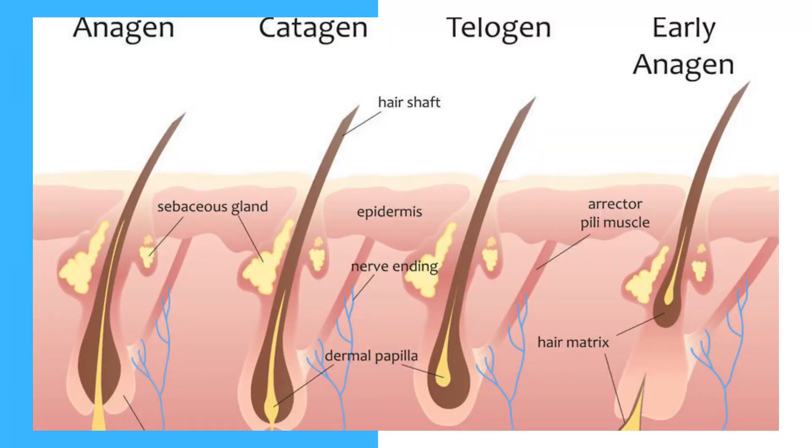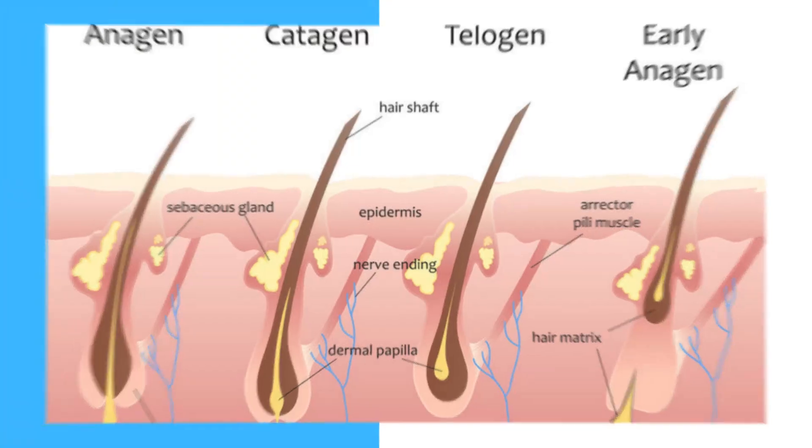Point number nine is MSM. MSM is very important because it elongates the anagen phase of hair growth. Hair loss often means your anagen (growth) phase is very short and your telogen (stop-growth) phase is increased. Supplementing with MSM helps increase the anagen phase. MSM is also great for gut healing, so it helps on multiple fronts.